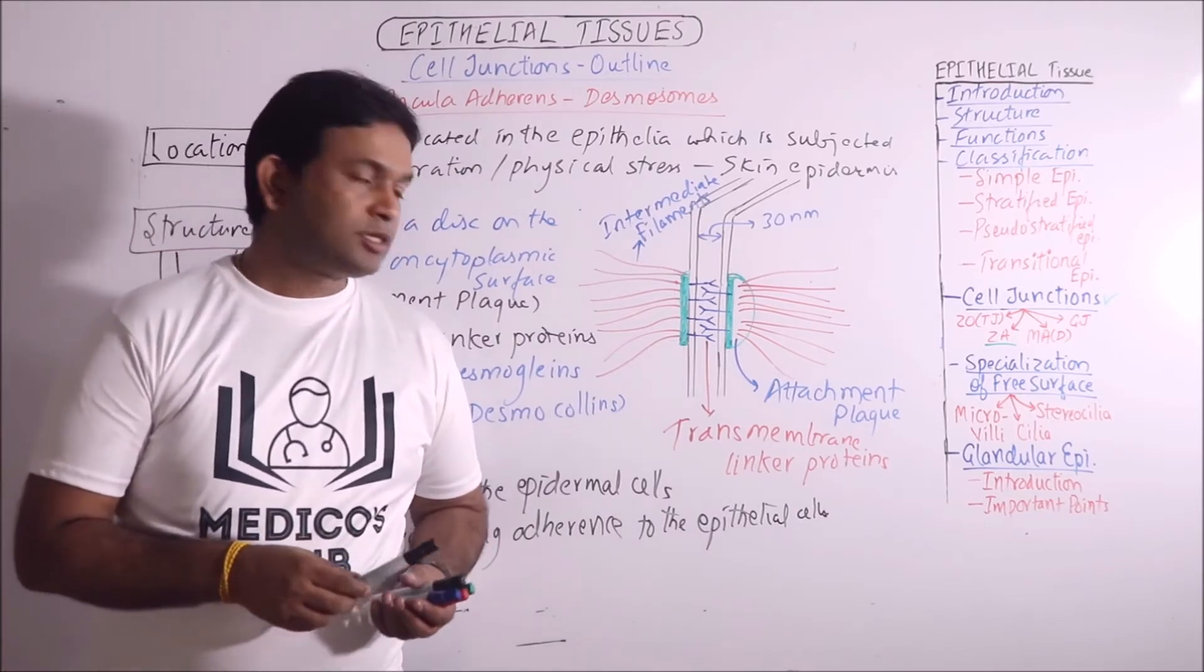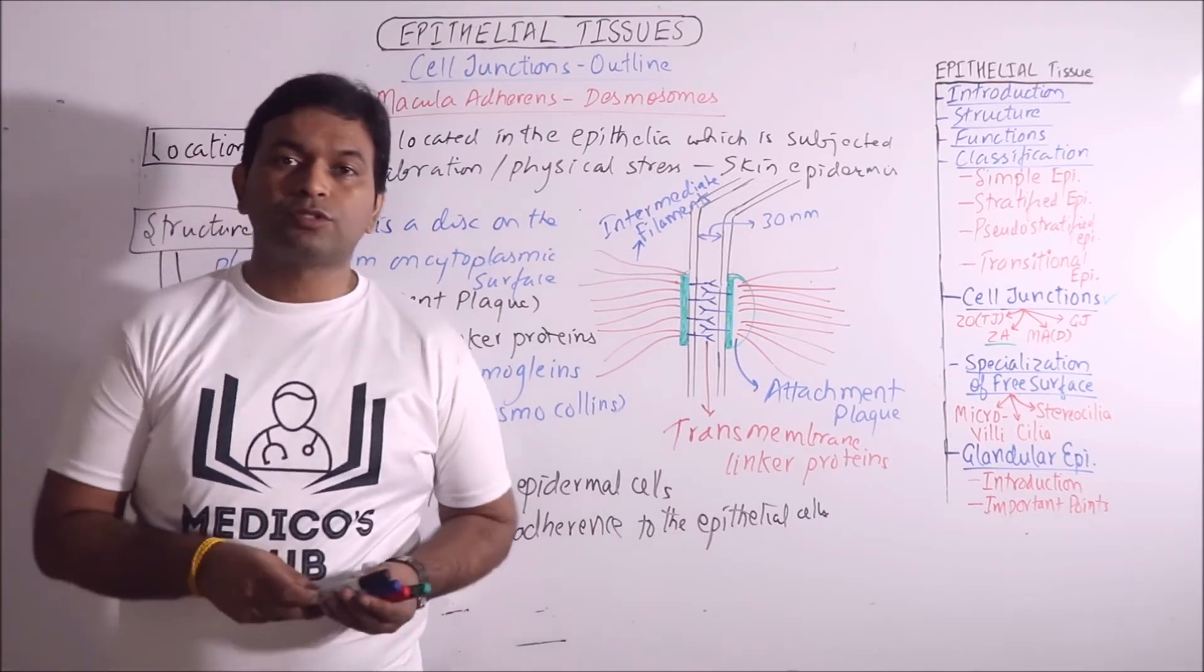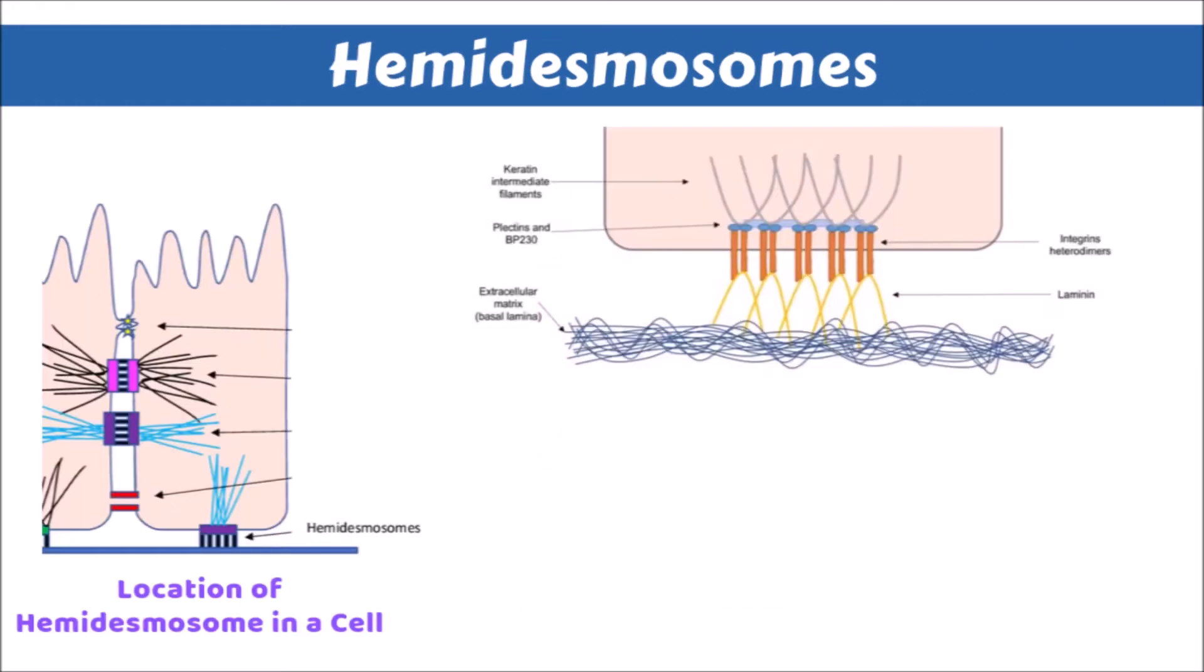Now, we will view some images and diagrams related to macula adherence or desmosomes. In this diagram, we can observe the structure of macula adherence or desmosomes. Desmosomes consist of disc-like structures made up of protein on the cytoplasmic surface of the plasma membrane of both cells having the desmosomes. These give linker glycoproteins or the transmembrane linker proteins towards the intercellular spaces which interconnect together so that the cells are kept adhered in the epithelia. These discs are stabilized by the presence of intermediate filaments or keratin filaments located in the cytoplasm.